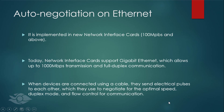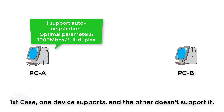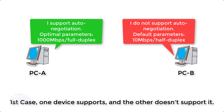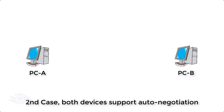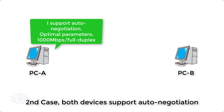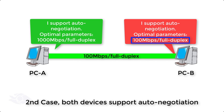The negotiation is based on the following. First, if PCA supports auto-negotiation and PCB does not support auto-negotiation, both devices use the default 10 megabits per second transmission and half-duplex mode of communication. Second, if PCA supports auto-negotiation and PCB supports auto-negotiation, both devices choose the fastest speed and best duplex modes supported by both.